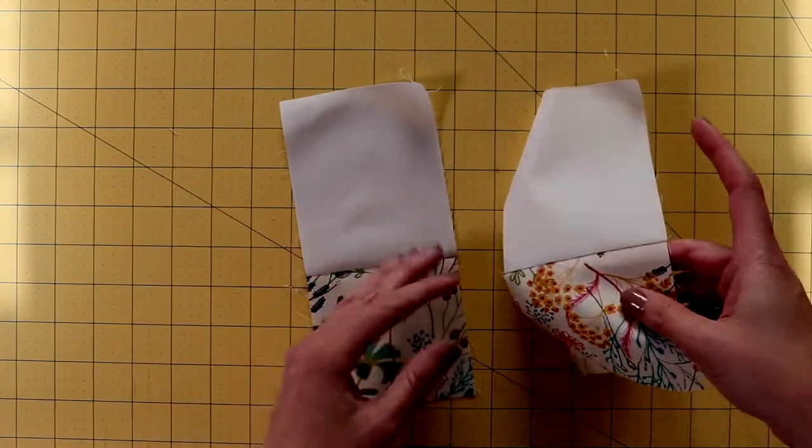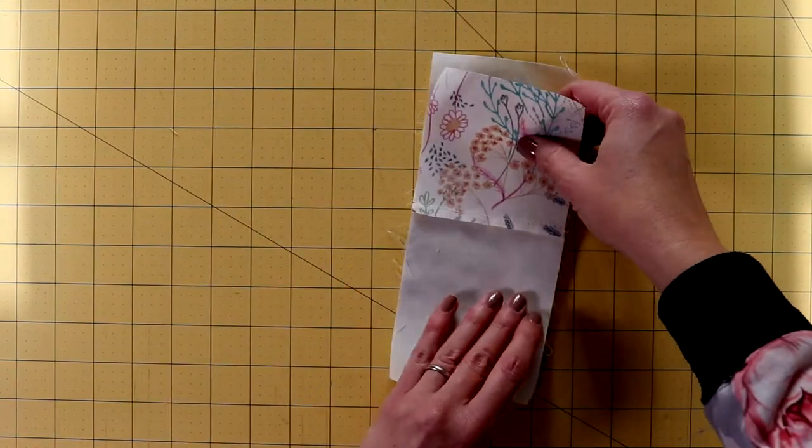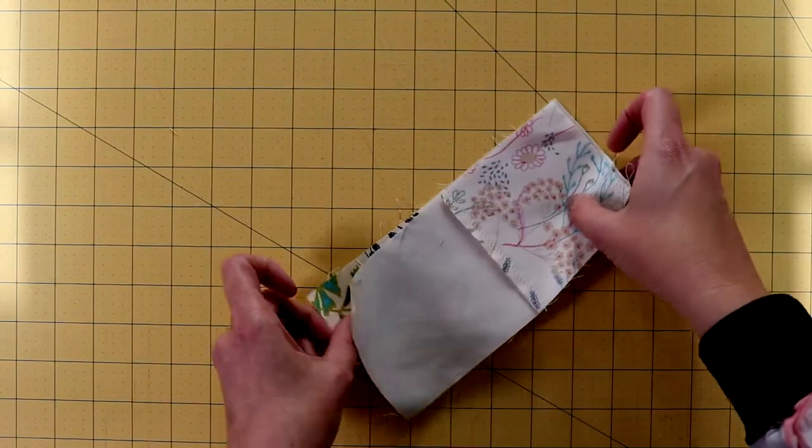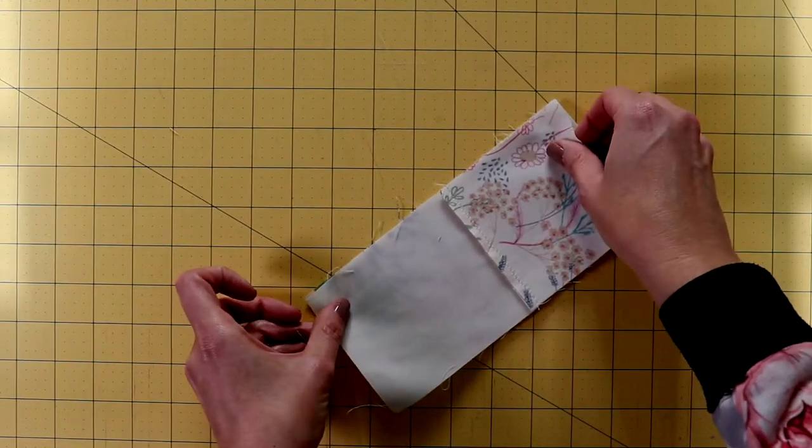Then we're going to sew these two together. We're going to kind of flip them so they're opposite, and then we're going to sew them right sides together. It doesn't matter which edge. It'll turn out the same.